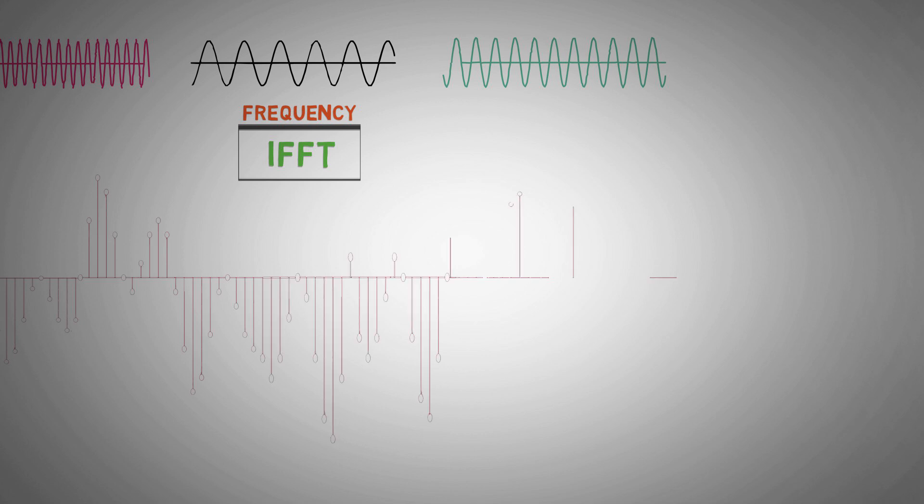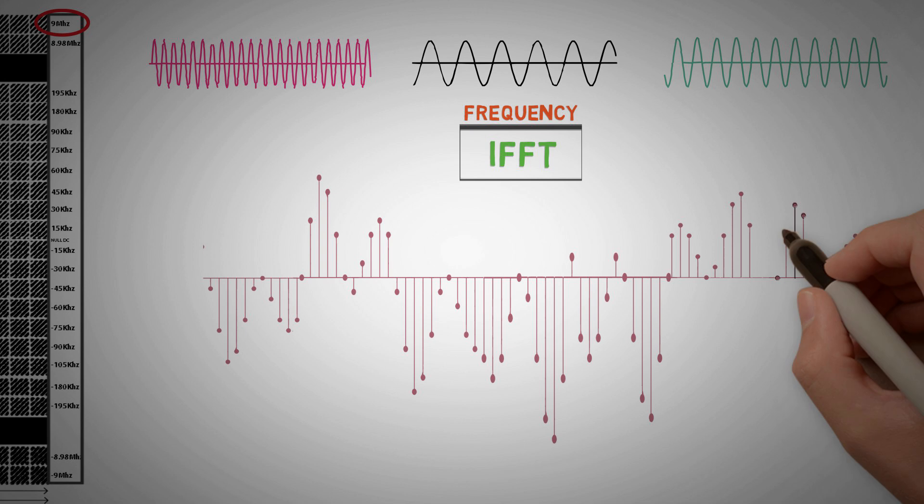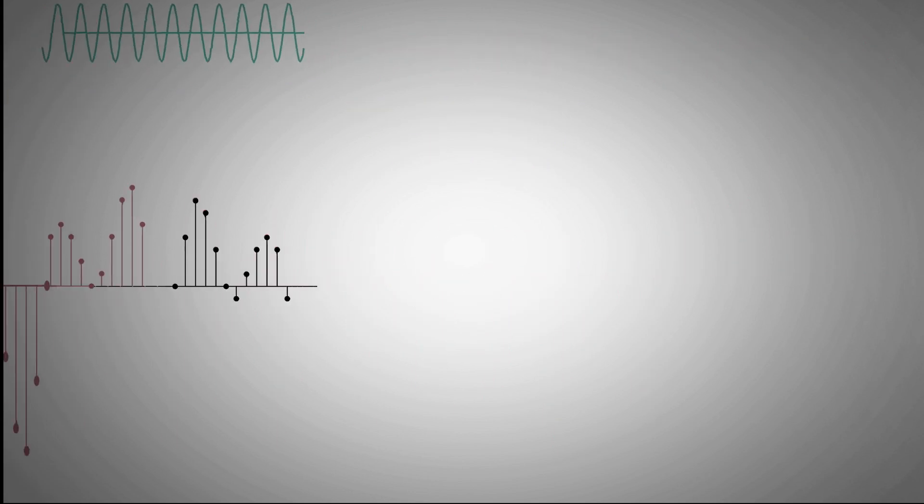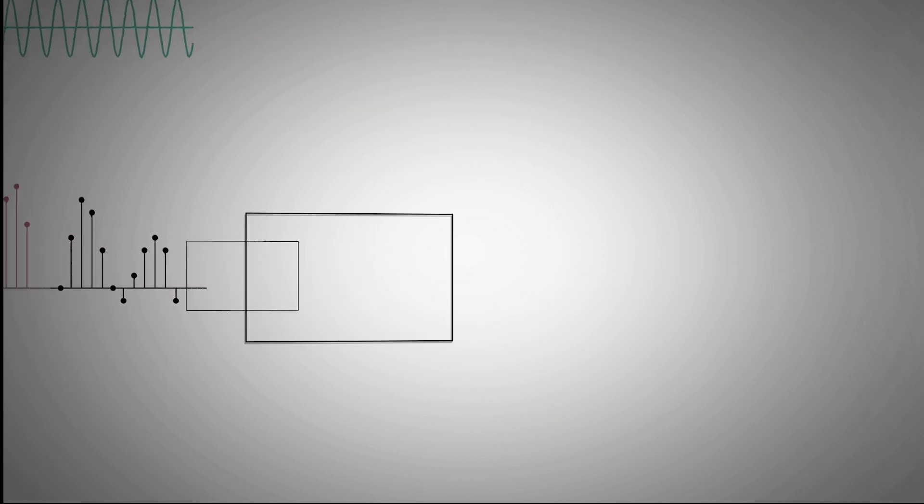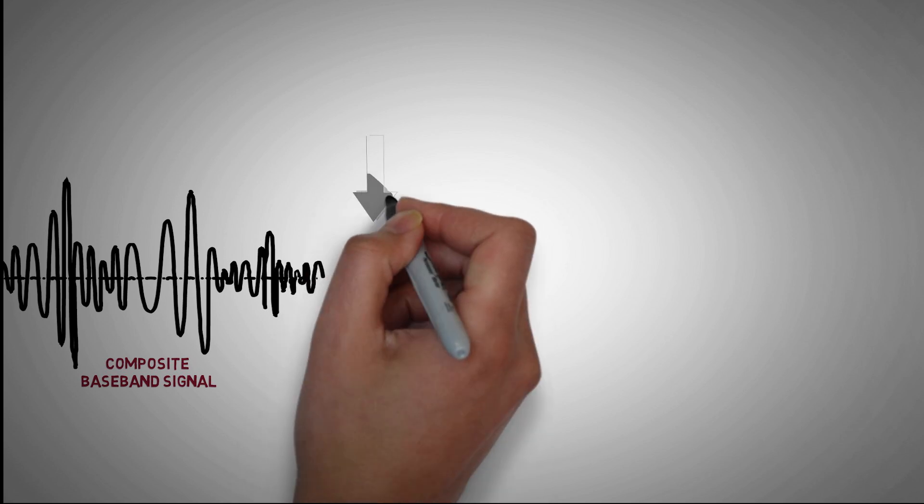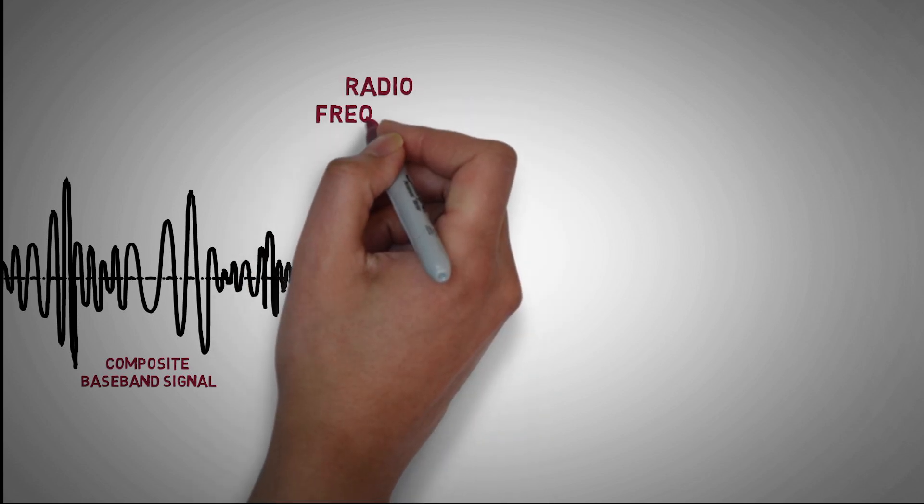Since OFDMA uses composite IFFT samples, cyclic prefix is added by taking some samples from the end of a symbol period and placing them at the beginning. Now this time-sampled signal is converted into analog wave by a digital to analog converter. Further composite waveform is modulated at the desired radio frequency for transmission.